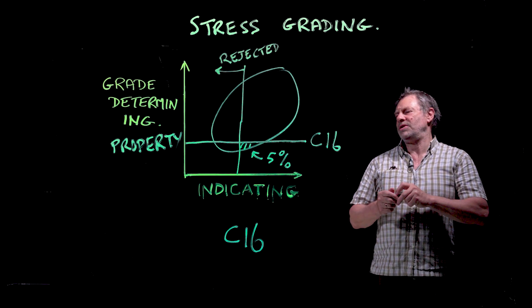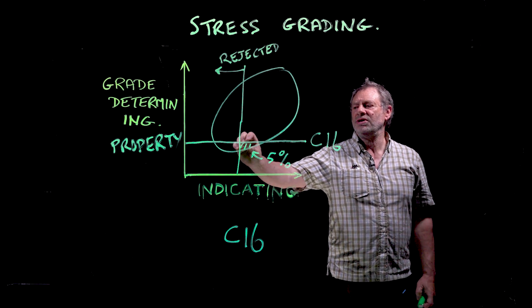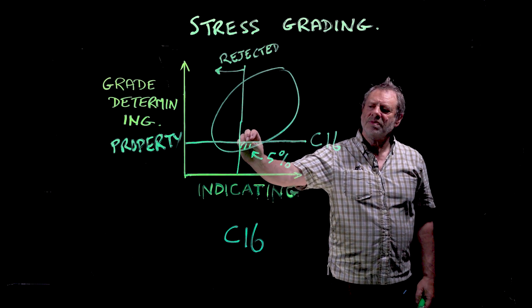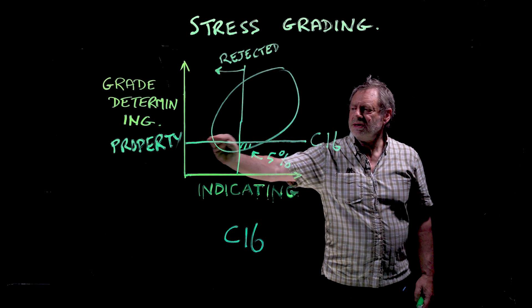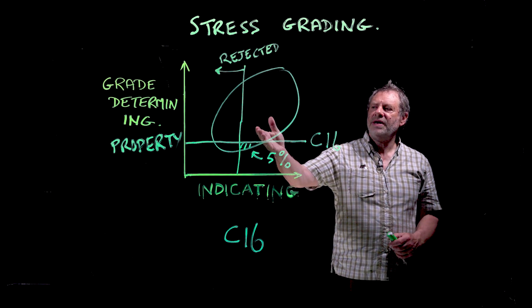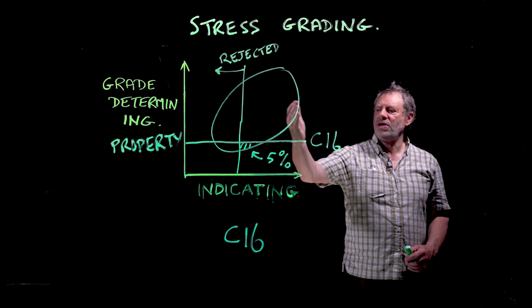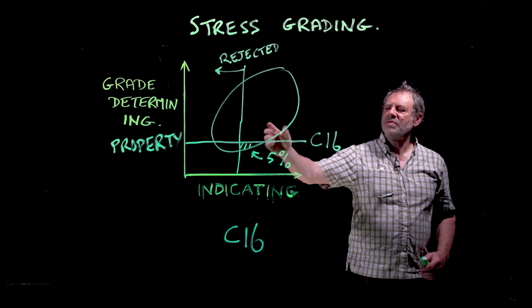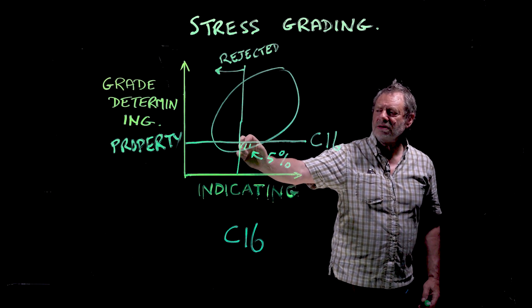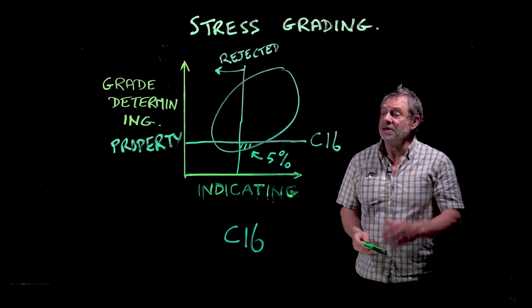Everything above this line gets accepted. The standard has nothing to say about the actual shape of the distribution, but within that distribution, there is five percent of the population below this indicating property value and 95 percent above. We choose this indicating property to make sure that within this little group here, there's no more than five percent of the population.